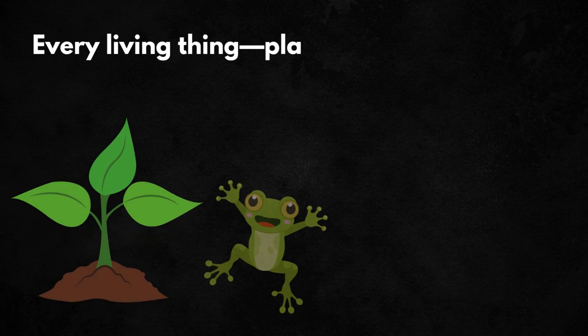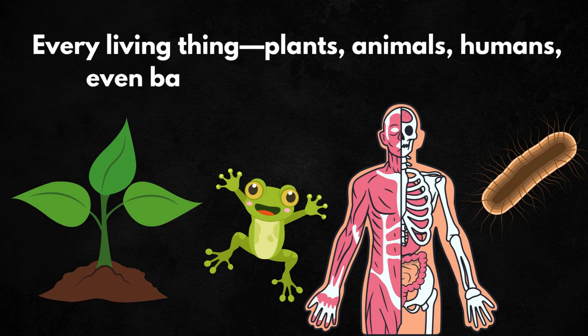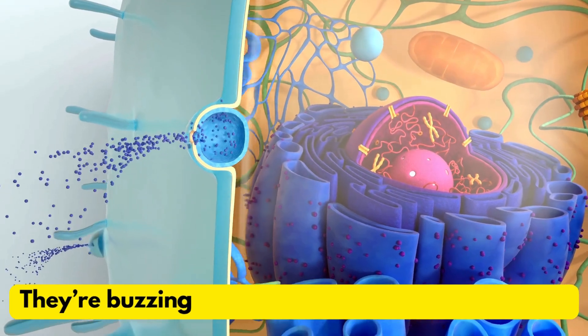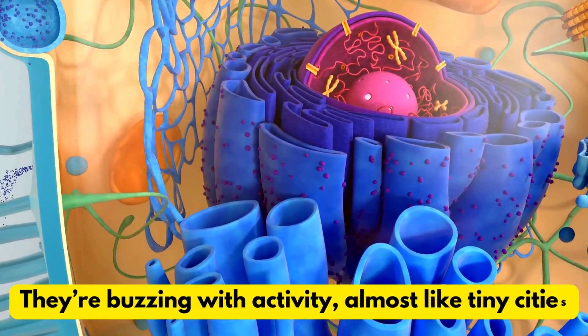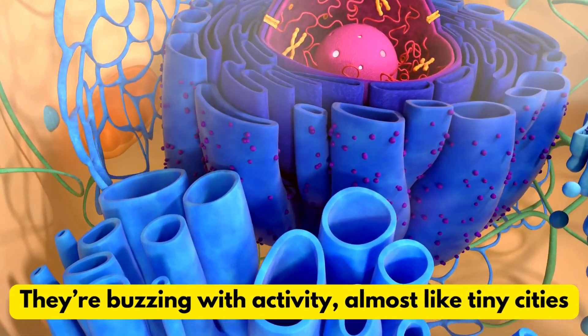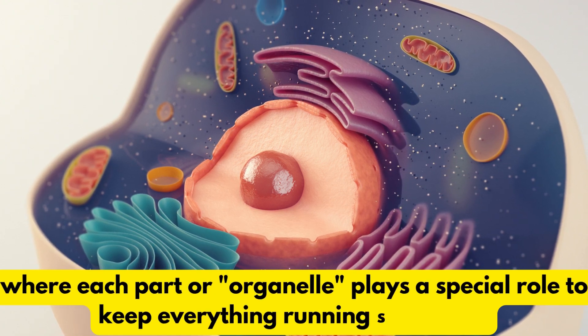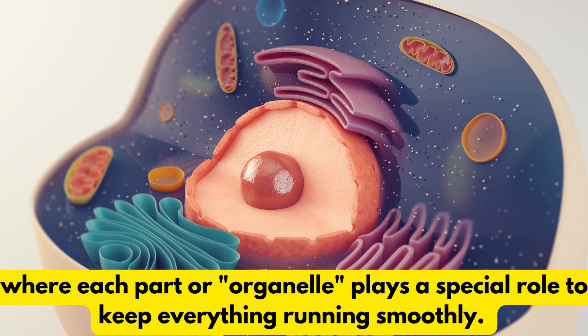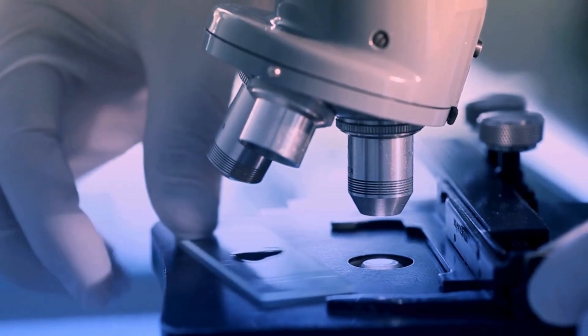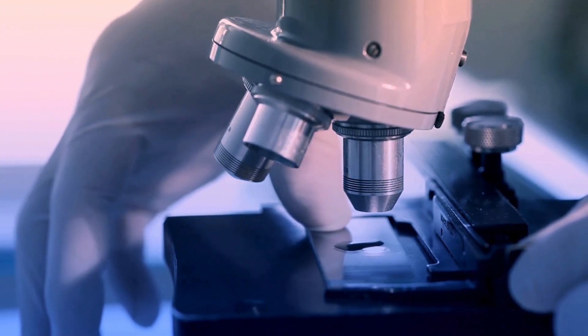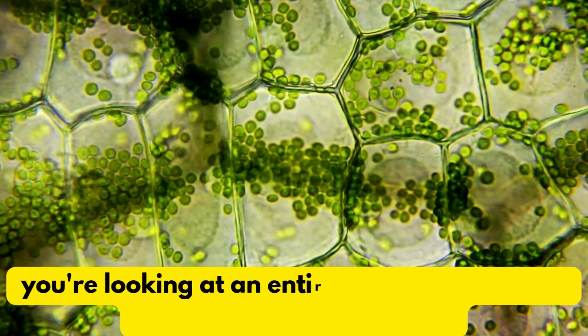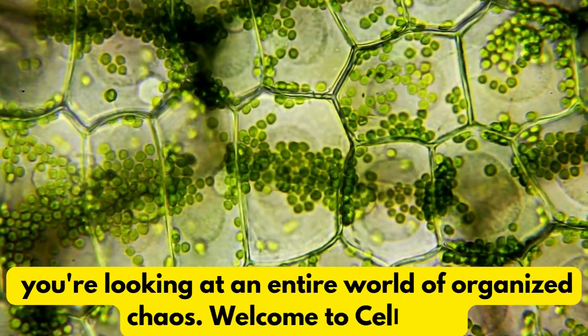Every living thing - plants, animals, humans, even bacteria - is made up of cells. And these cells, they're not just empty bubbles. They're buzzing with activity, almost like tiny cities where each part or organelle plays a special role to keep everything running smoothly. So whether you're looking at a leaf or your own skin under a microscope, you're looking at an entire world of organized chaos. Welcome to Cell City.